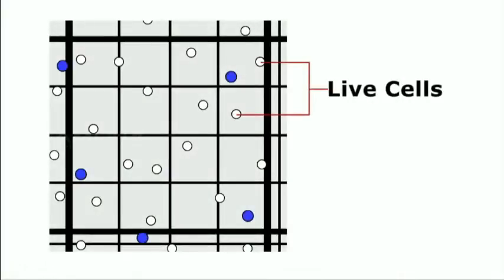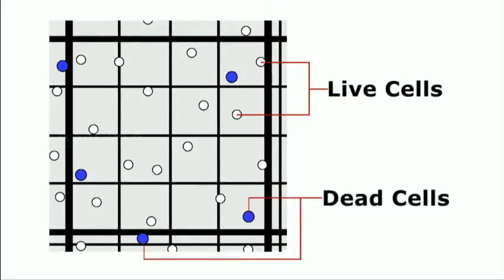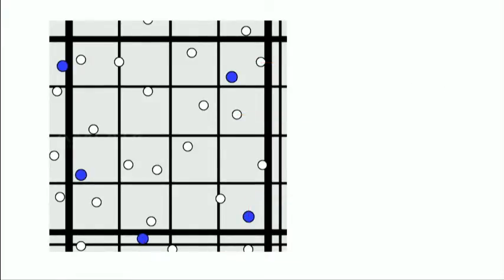If there are too many or too few cells to count, repeat the procedure either by concentrating or diluting the original suspension as appropriate. For an accurate determination, the total number of cells overlying one square millimeter should be between 15 and 50. Live cells appear colorless and bright, or refractile, under phase contrast, while dead cells stain blue and are non-refractile. Keep a separate count of viable and non-viable cells.